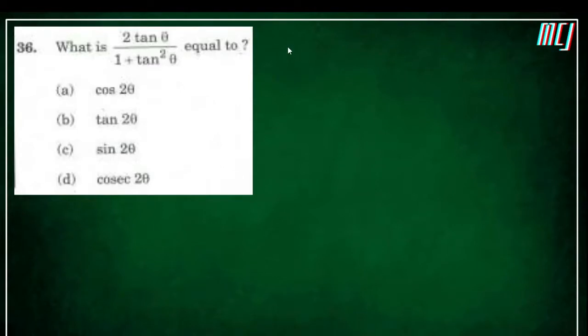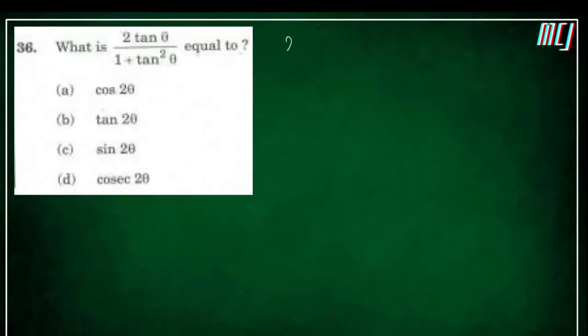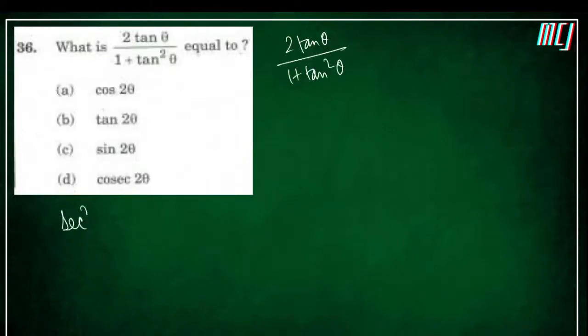Coming to the first question — it is a little bit easy, though a little blurred. The question is: 2tanθ divided by (1 + tan²θ). We know the identity — sec²θ minus tan²θ is equal to 1.